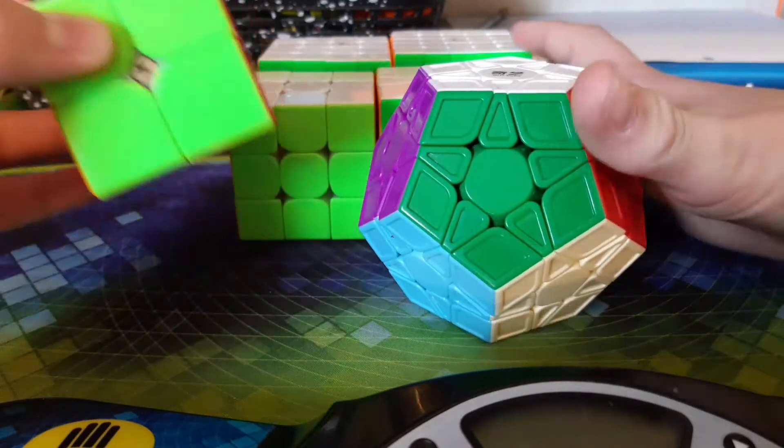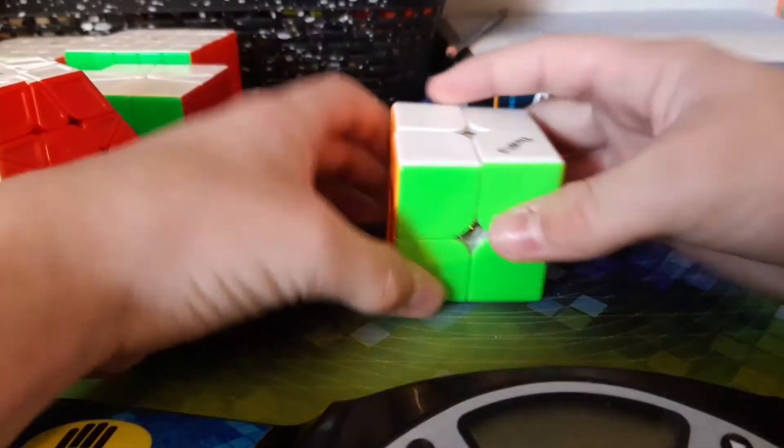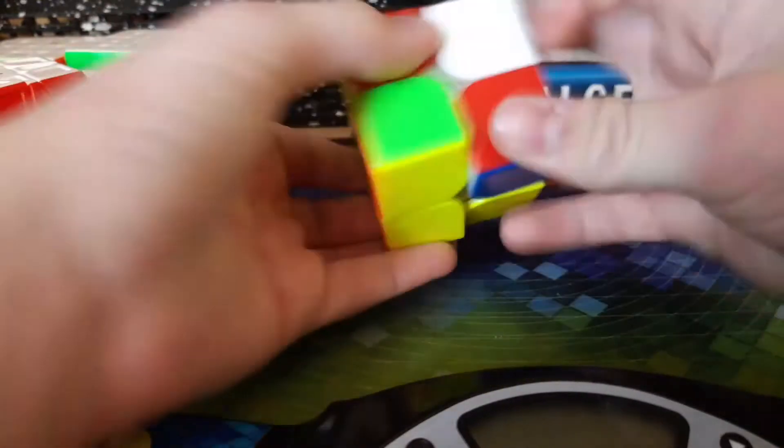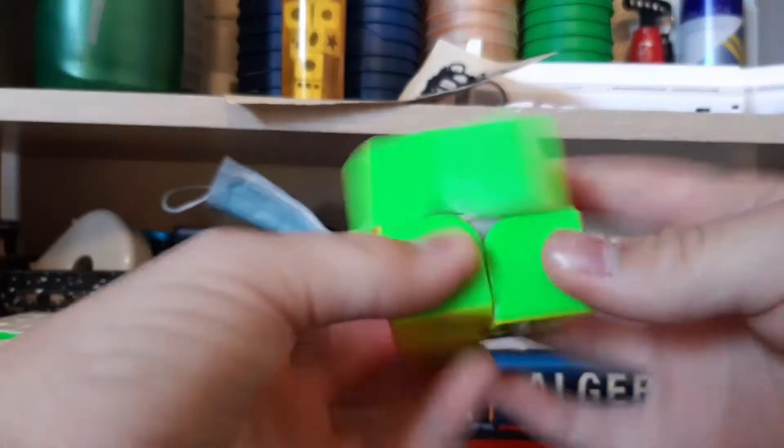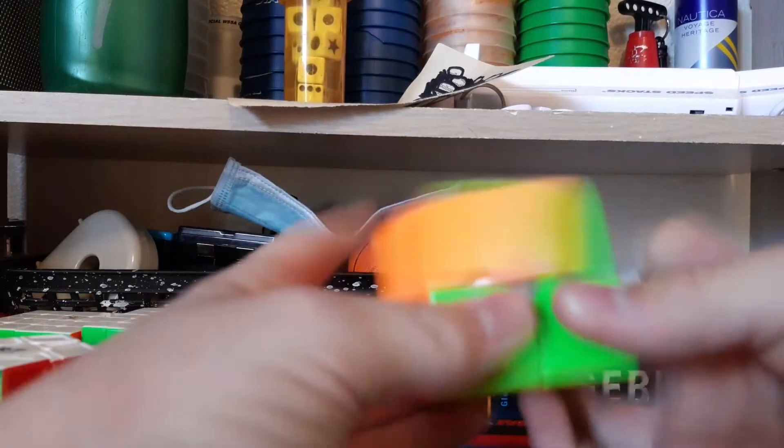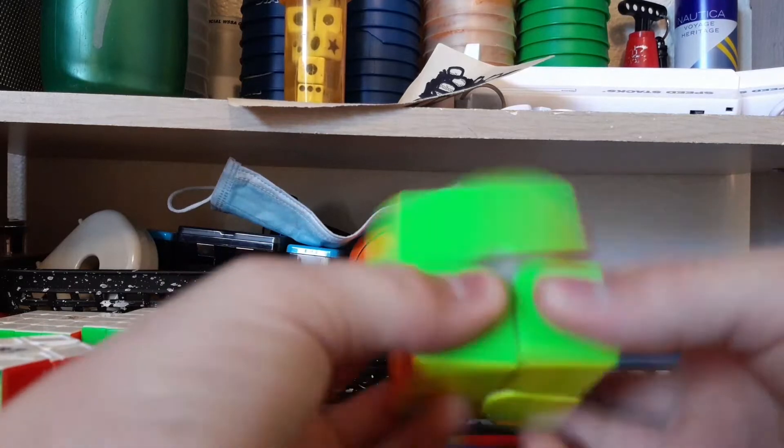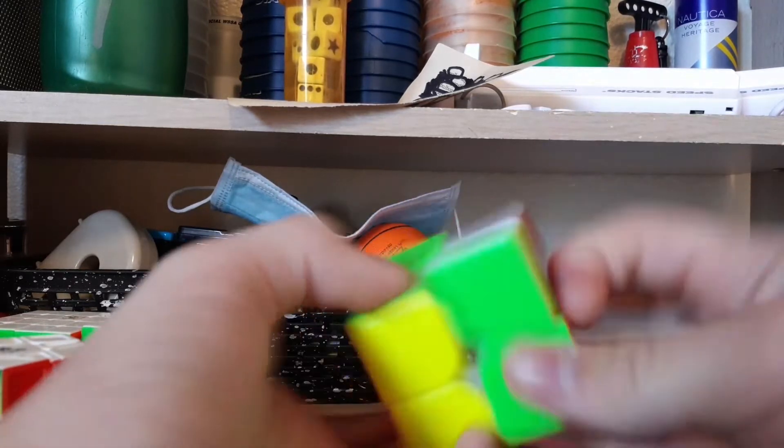Starting off with 2x2, I'm going to move this over. I'm using this Valk 2M. Let me move the camera up. Really nothing much to say about it. It is a little bit sluggish, but it's very stable and smooth and pretty fast, and if you set it up correctly it can become really nice.